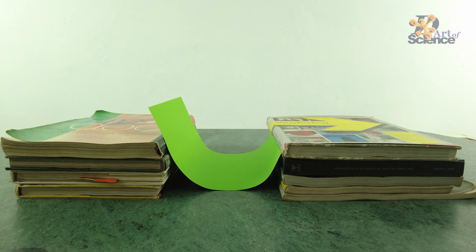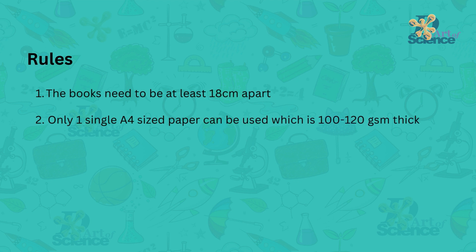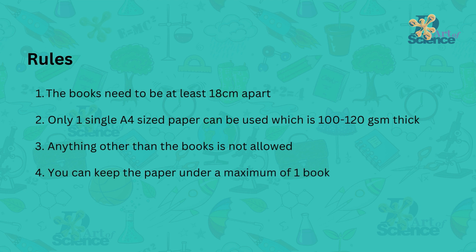Before we start this challenge, there are a couple of rules. First rule is that the books need to be at least 18 centimeters apart. Next, you can use only one single A4 sized paper which is between 100 to 120 GSM thick. Next, you cannot use anything other than the books. Next, you can keep the paper under a maximum of one book. And finally, folding of the paper is allowed.